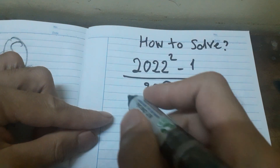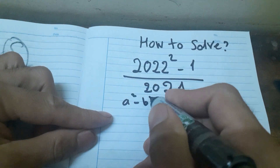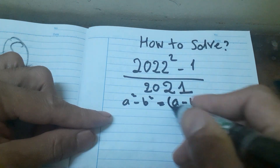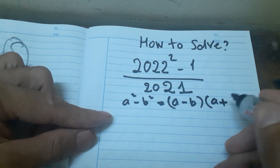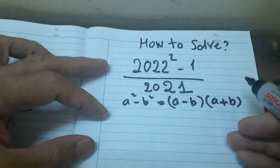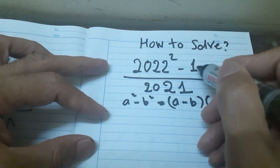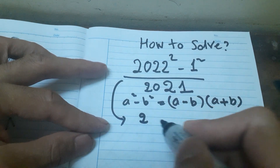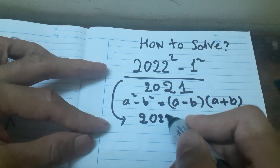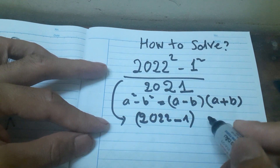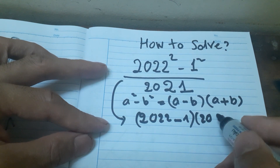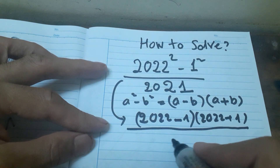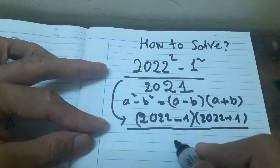We have a square minus b square equals a minus b times a plus b. One equals one square equals two thousand twenty two minus one, two thousand. Twenty two plus one equals the result, divide two thousand.